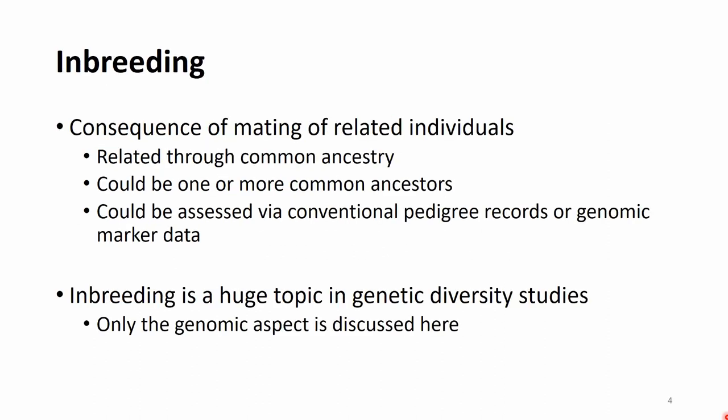In this presentation we will talk about inbreeding, so it is important to define what it is. Inbreeding is a consequence of mating of related individuals. Two individuals are related if they have a common ancestor. There could be one or more such common ancestors, identifiable via conventional pedigree records — non-genomic written records about the parentage of each individual — or using genomic marker data.